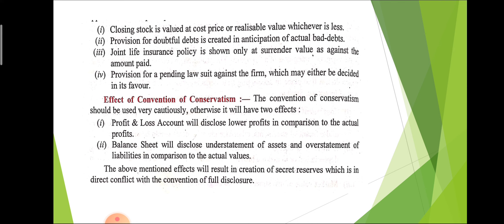The convention of conservatism should be used very cautiously; otherwise it will have two negative effects. First, the profit and loss account will disclose lower profit. Second, the balance sheet will disclose understatement of assets and overstatement of liabilities — which is not the actual position. So to know the actual profit and the actual position of the balance sheet, we must follow the conservatism concept. Among all conventions, conservatism is the most important. With this our chapter is finished, and in the next video we will discuss the next chapter.